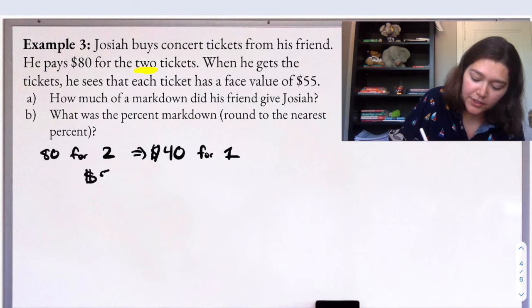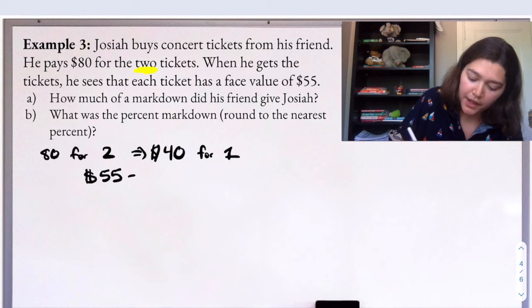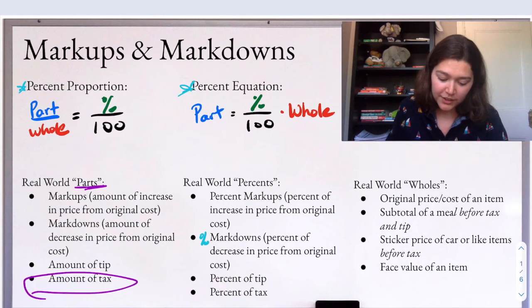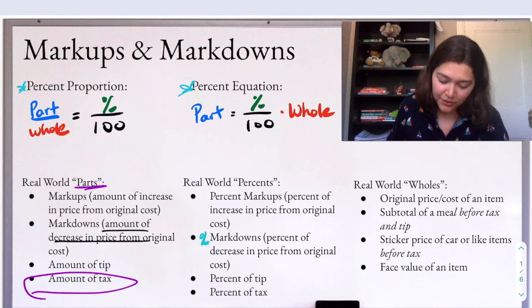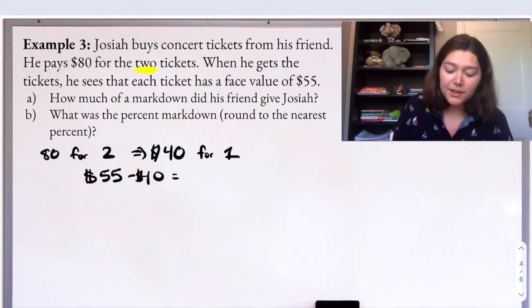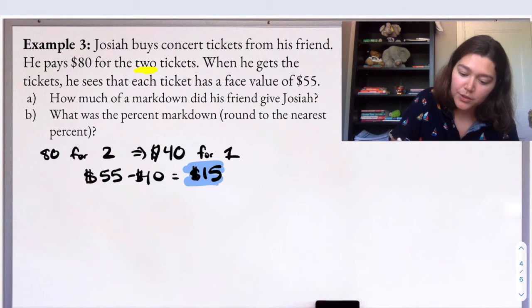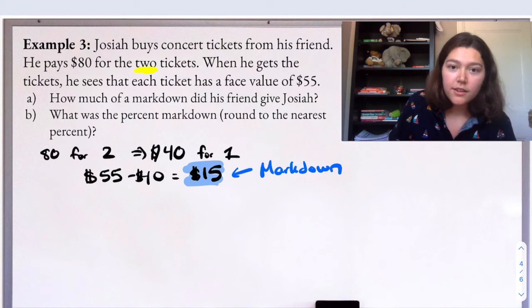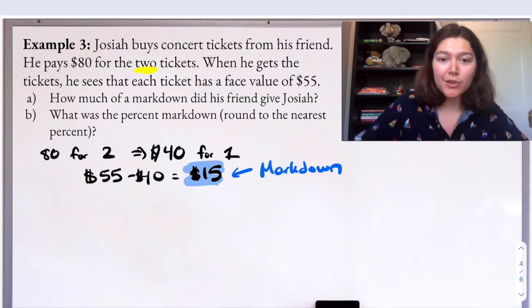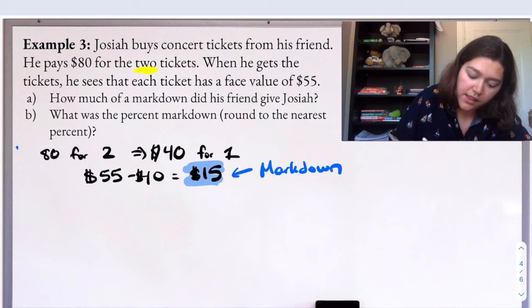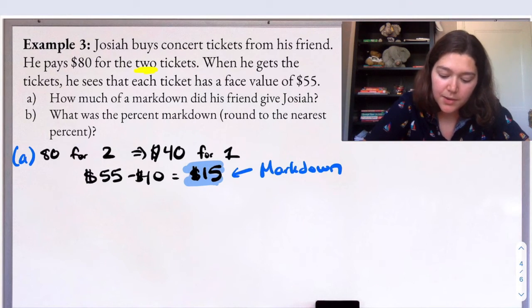That's $55. So $55 is the original. He's paying $40 for it. So how much money is he not paying? What is the amount of decrease? That's going to be my markdown. The amount of money we're not paying, the amount of decrease. So that's actually our answer for part A. $15.